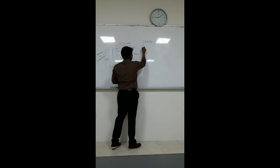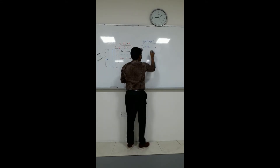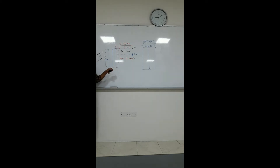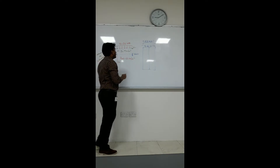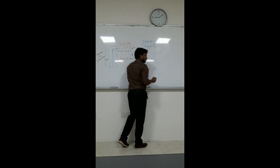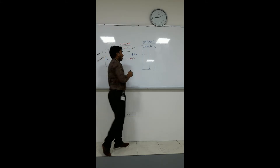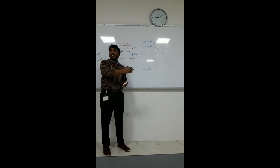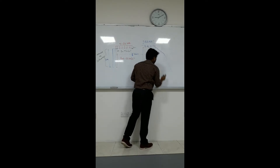The distribution diagram for the drained condition shows: due to the surcharge load, the pressure is Q·Kp, and due to cohesion, it is 2C'√Kp — we use C' (effective cohesion) because this is a drained condition. The stress increases constantly with depth up to the groundwater table, and after that, due to pore water pressure, there is a change in stress.